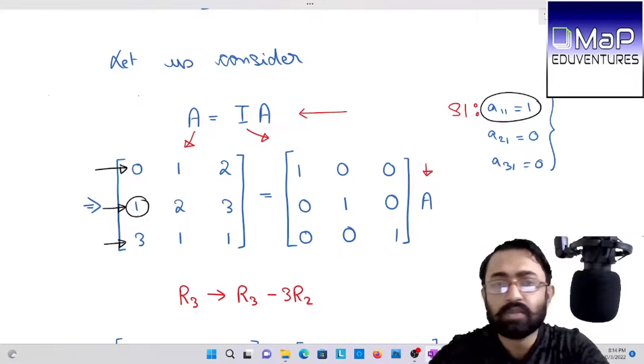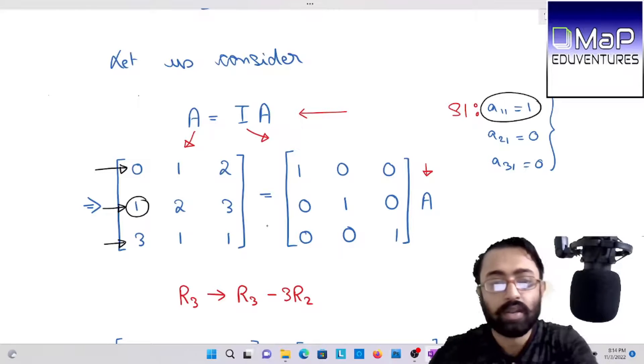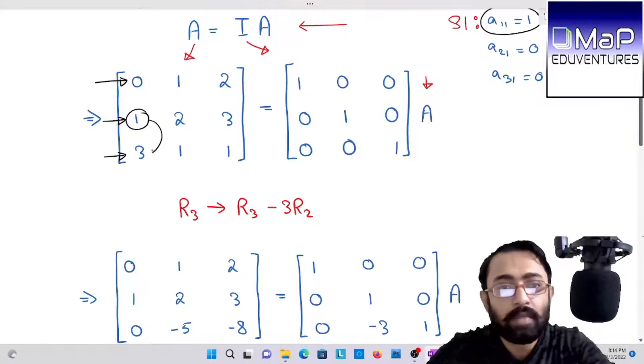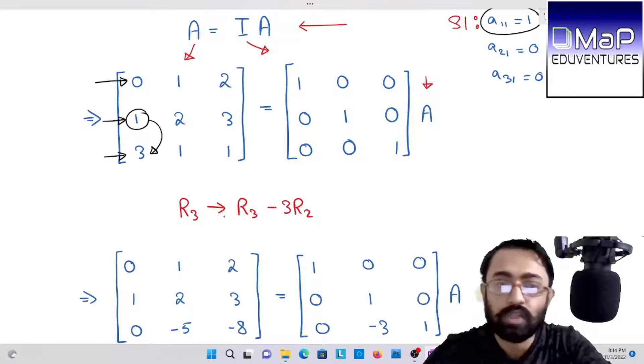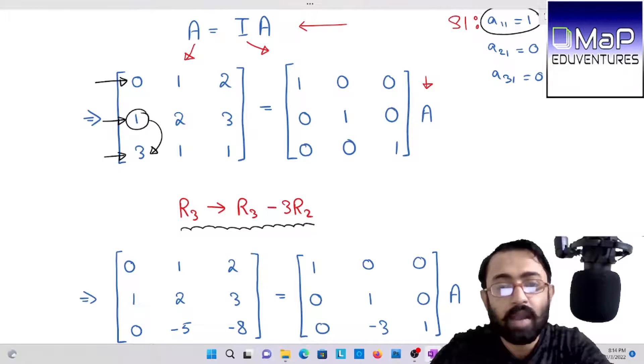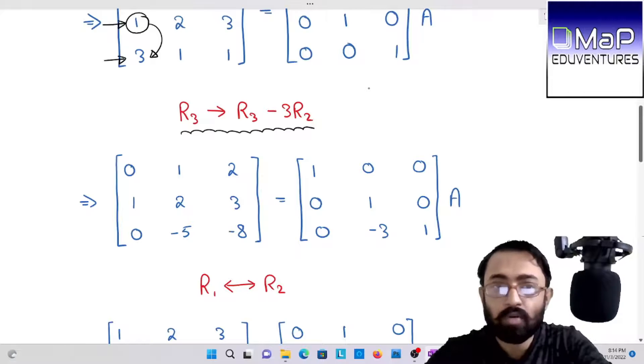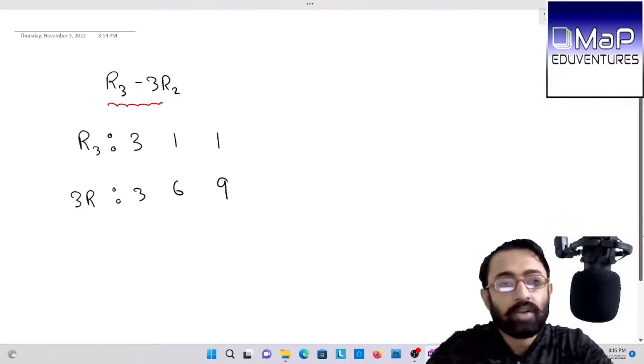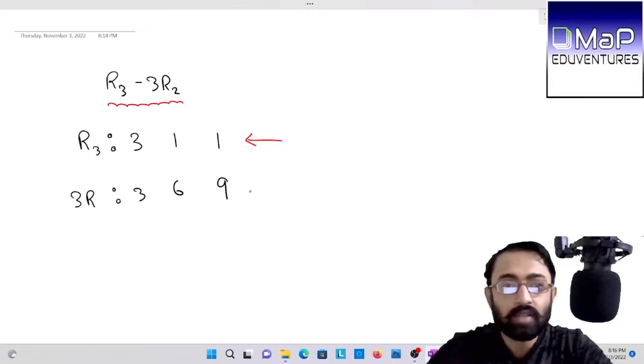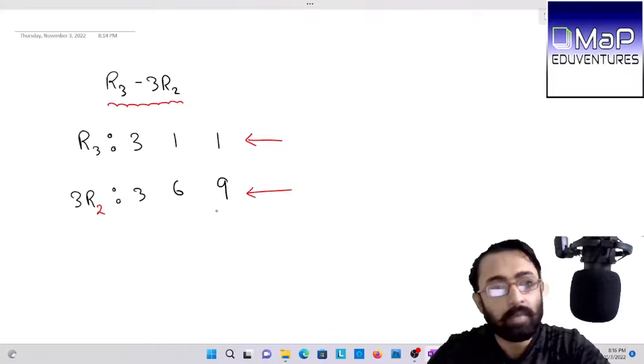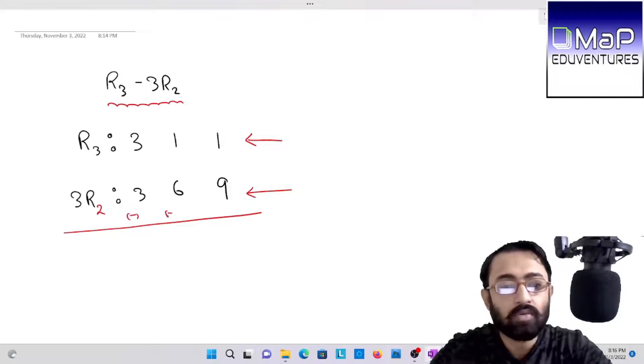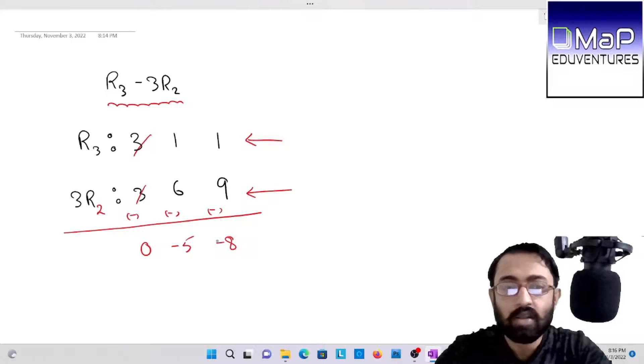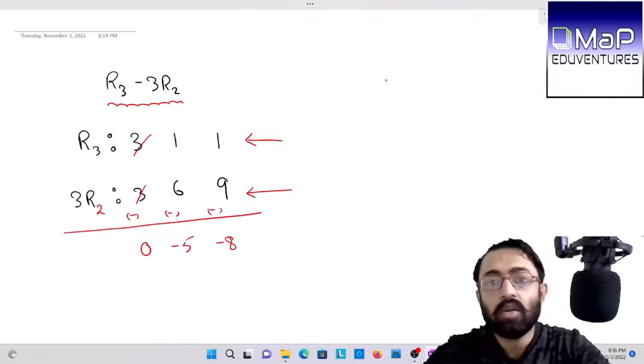The first thing we should do here, with the help of this one, let me make the three in third row zero. To make it zero, I have used this step: R3 minus three times of R2. This operation we have to apply both on left hand side as well as right hand side matrix. I will not do the calculation again, but R3 minus three times of R2, first of all write R3, then three times of R2, and simply you have to subtract.